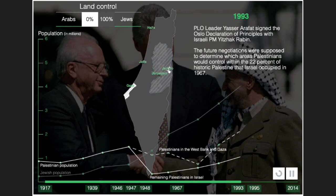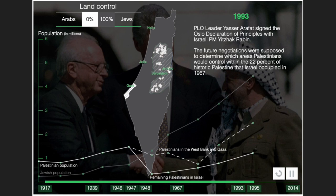In 1993, PLO leader Yasser Arafat signed the Oslo Declaration of Principles with Israeli Prime Minister Yitzhak Rabin. Future negotiations were supposed to determine which areas Palestinians would control within the 22% of historic Palestine that Israel had occupied since 1967.